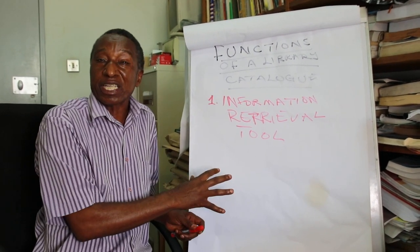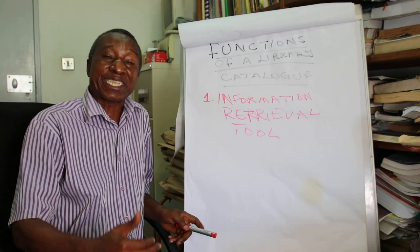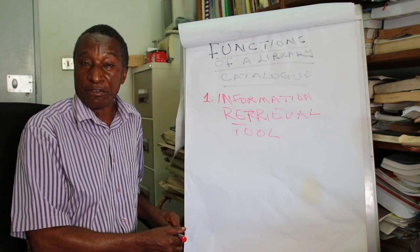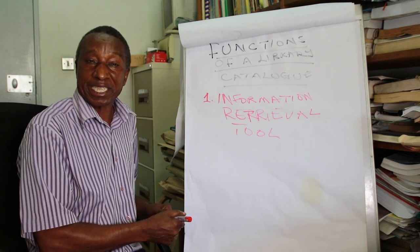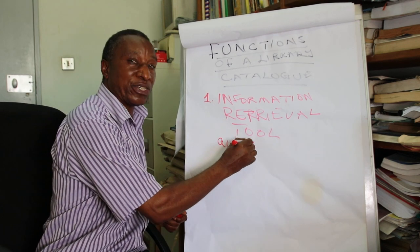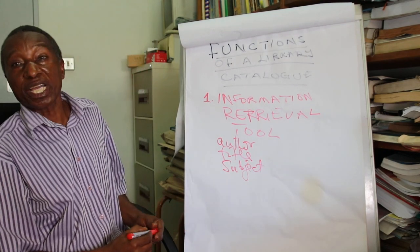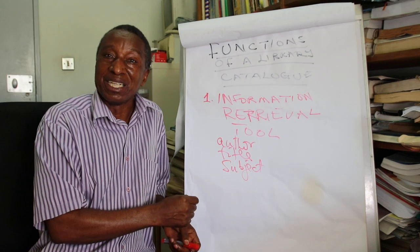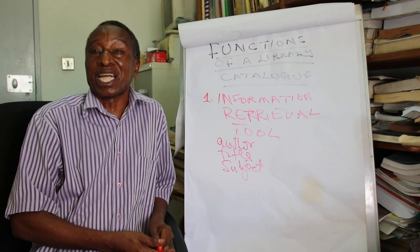It becomes very difficult to search and retrieve these materials if there is no catalog. The catalog is a comprehensive listing of all that the library has — a record of what the library has — and therefore it is used for retrieving materials. We can search and find materials if we know the author, the title, or the subject. A catalog helps us find out what the library has by a particular author, title, or on a particular subject.